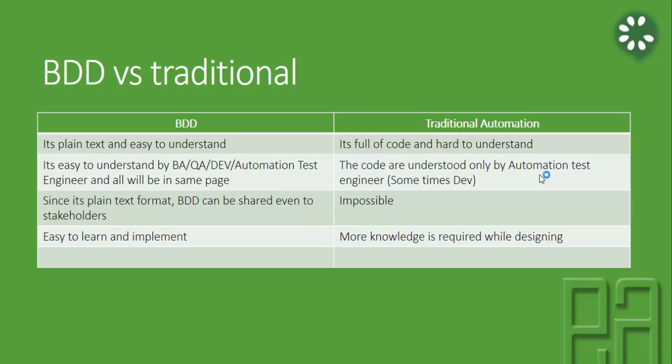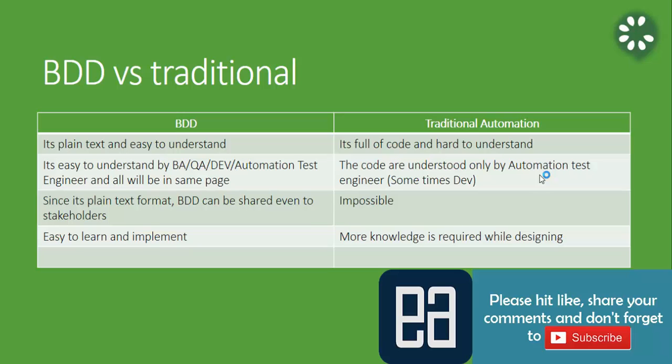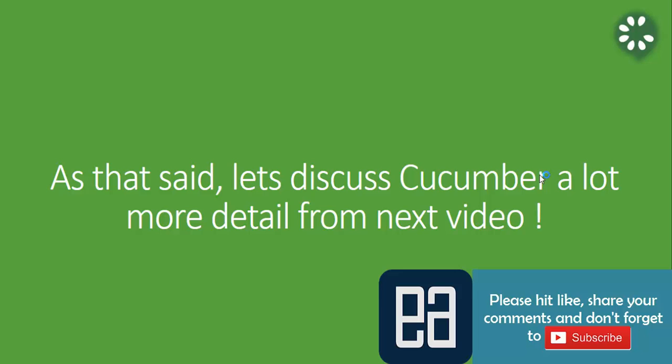What is the differentiation between BDD and traditional automation code? BDD is plain text and easy to understand, whereas traditional automation is full of code and hard to understand. BDD can be understood by QA, developers, automation engineers, and business analysts all on the same page. Traditional automation — with page object models and lots of code — can only be understood by automation engineers or some developers, not by BAs or manual testers. Since it's plain text, BDD can even be shared with stakeholders, which is impossible with traditional automation. BDD has only 11 syntax keywords, making it very easy to implement and learn, whereas traditional automation requires much more knowledge. Let's discuss Cucumber in more detail in the next video — thank you for watching and have a great day.